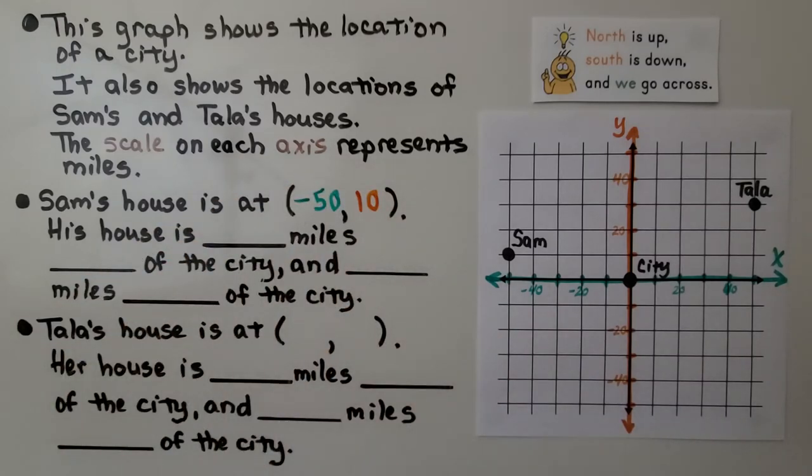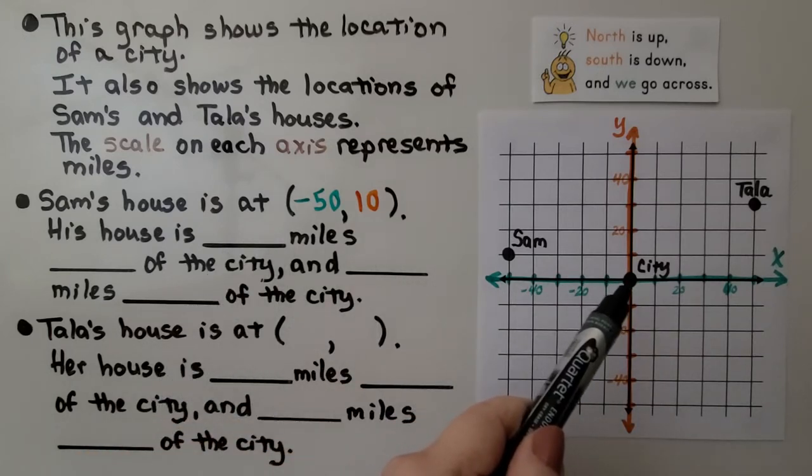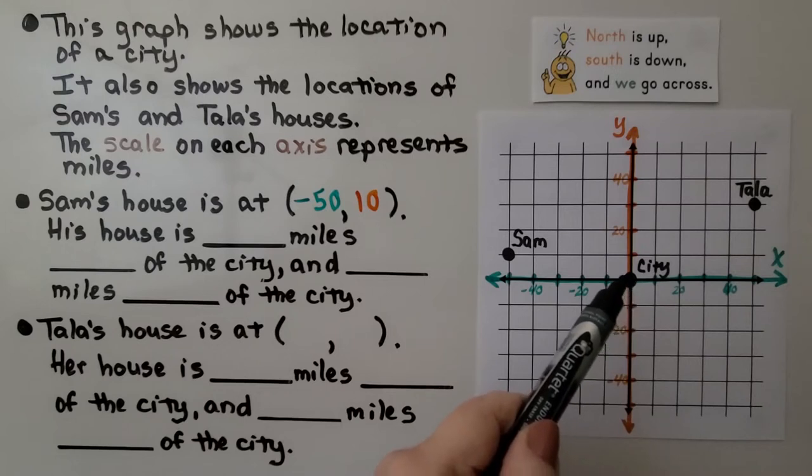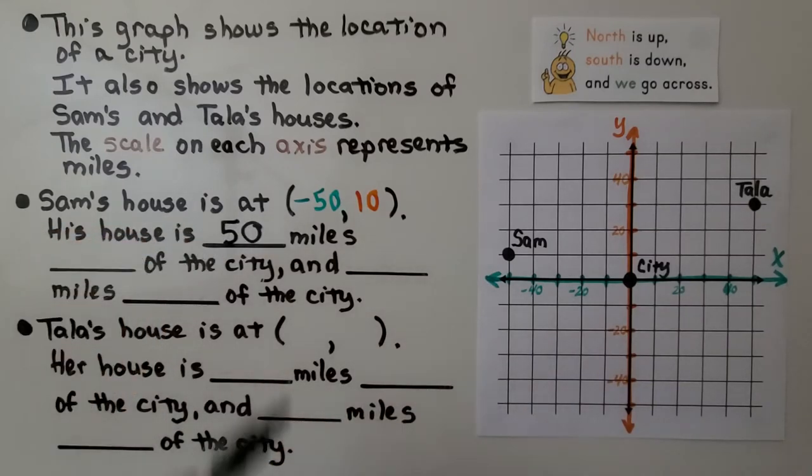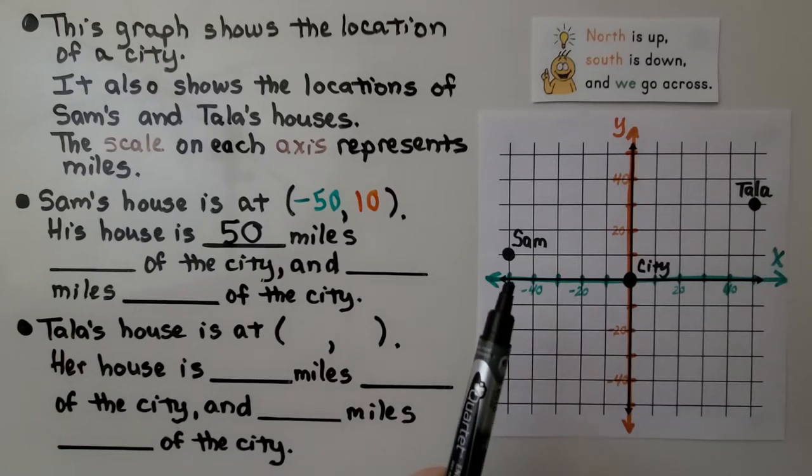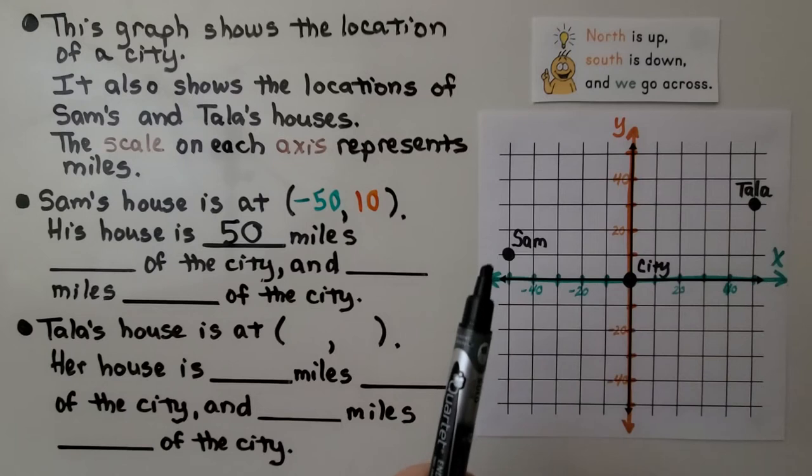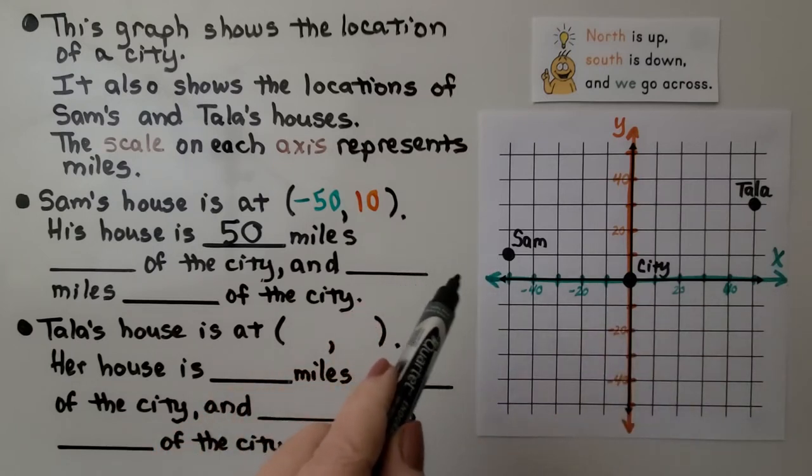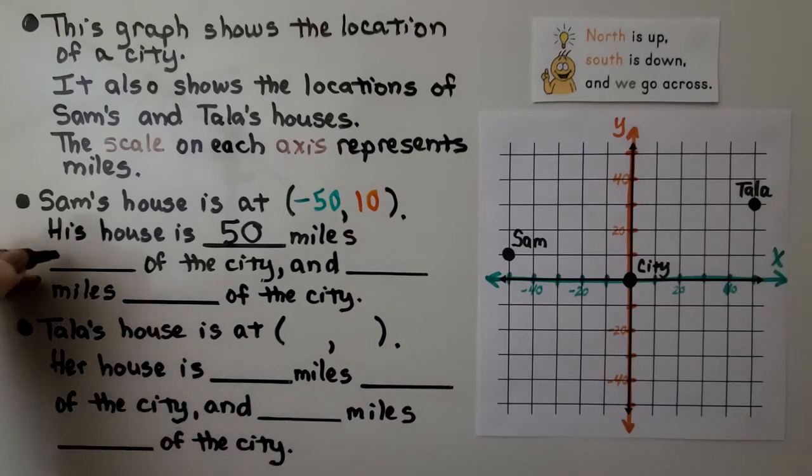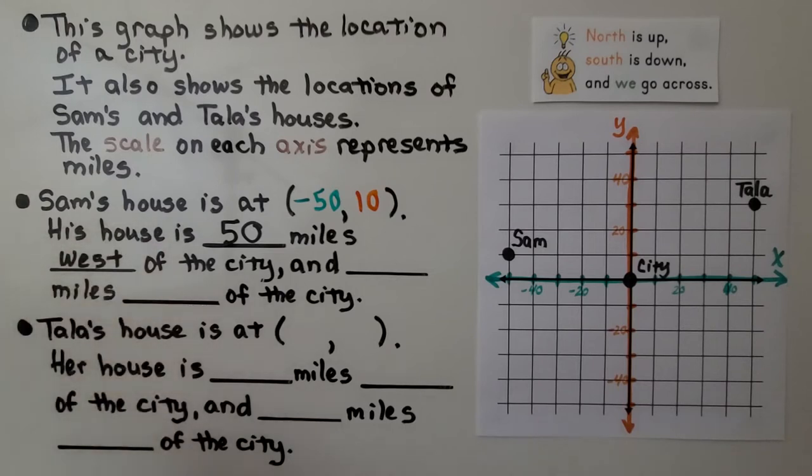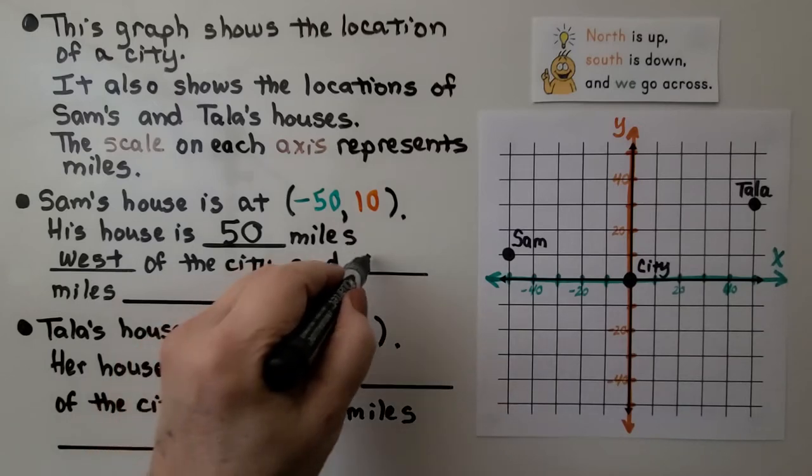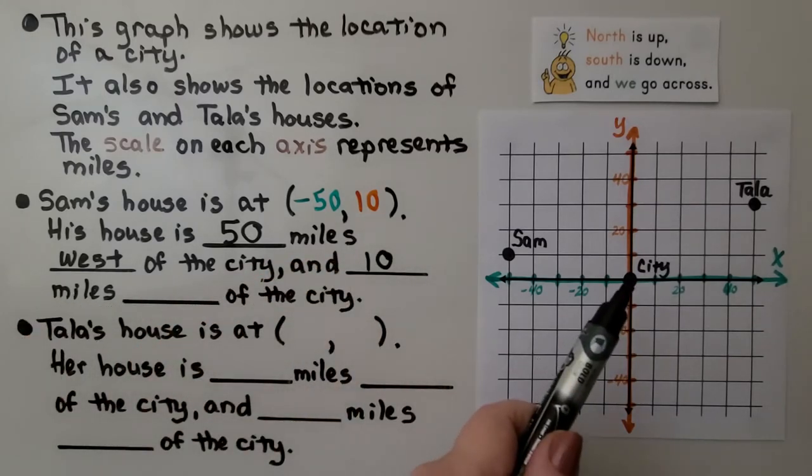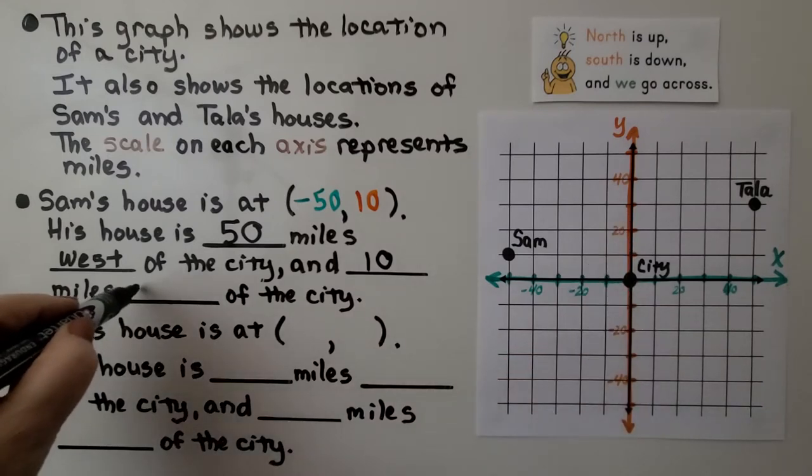So, his house is how many miles from the city? If that's the city, then distances are always positive. That means it's 10, 20, 30, 40, 50 miles from the city. In what direction? Is this east or west of the city? Here's the city, and here's Sam. We go across, so this is west. So, he's west of the city. And he's 10 miles north of the city.